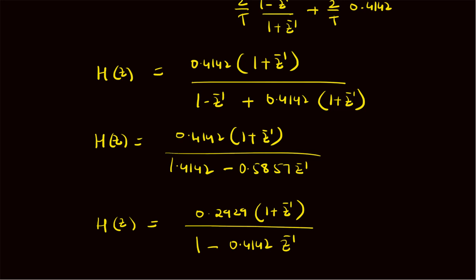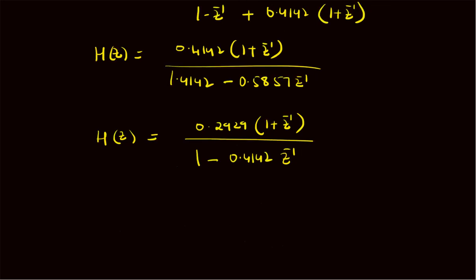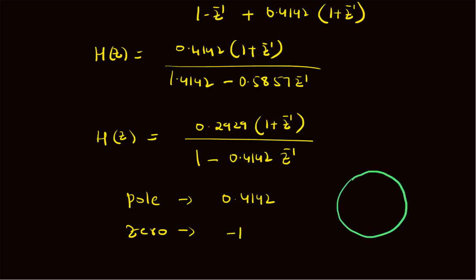We can see that the poles are different compared to the analog domain. There is only one pole located at 0.4142, and the zero of the system function is located at −1. Both are on the real axis — the zero is at −1 and the pole is at 0.4142.